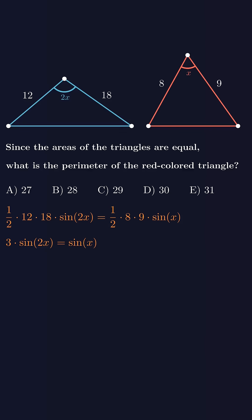Now the expansion of sine of 2x is two times sine of x times cosine of x. When you substitute that in, the sine of x terms cancel out and you're left with cosine of x equals one over six.